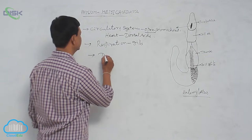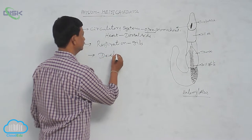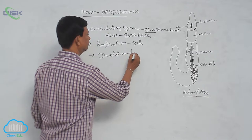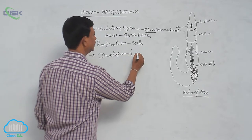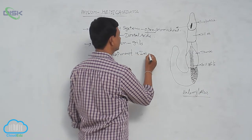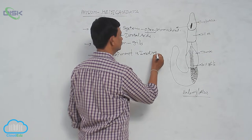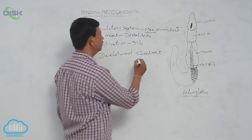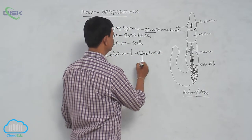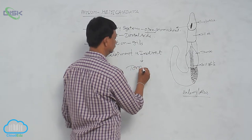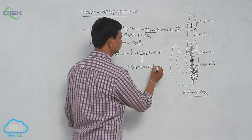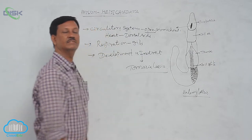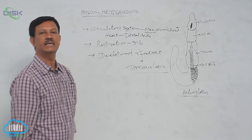Development is indirect. The larval form is known as the tornaria larva. The tornaria larva is present in the life history of Hemichordata.